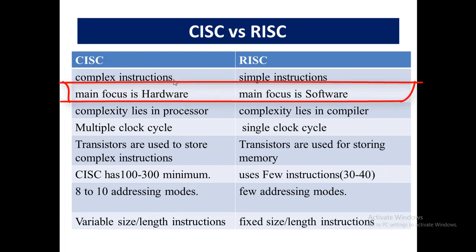CISC's main focus is hardware because all the complex instructions and functionality are defined in the microprocessor, so it deals basically with hardware. While on the other hand, RISC's main focus is software — all the simple instructions are embedded in software.